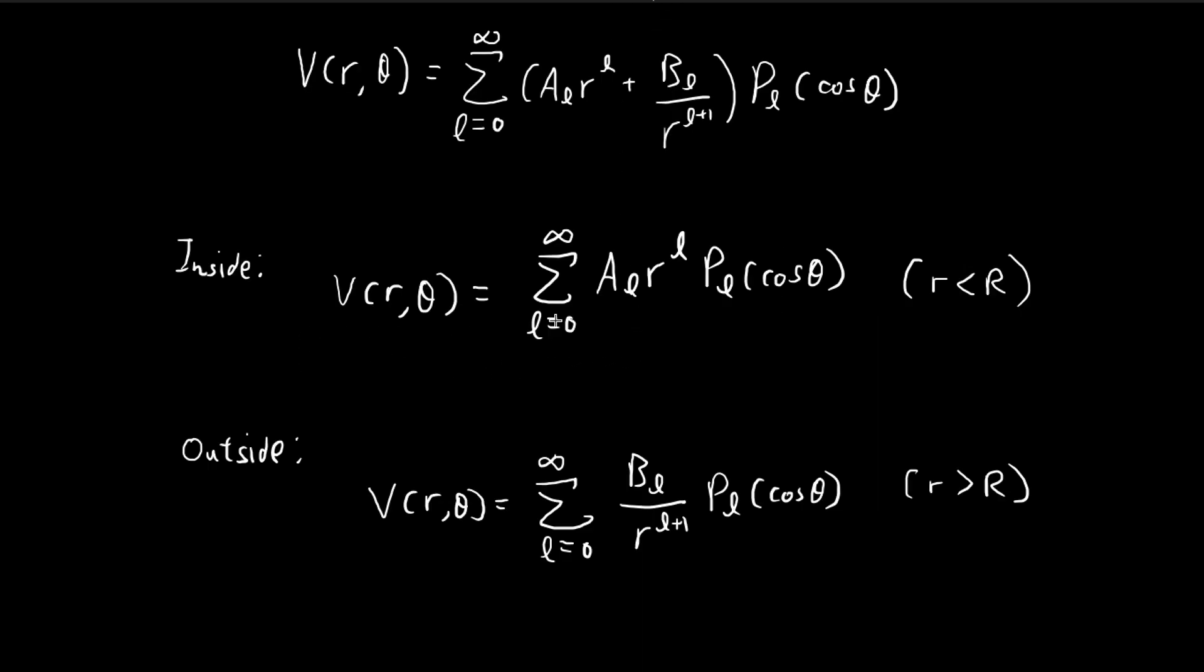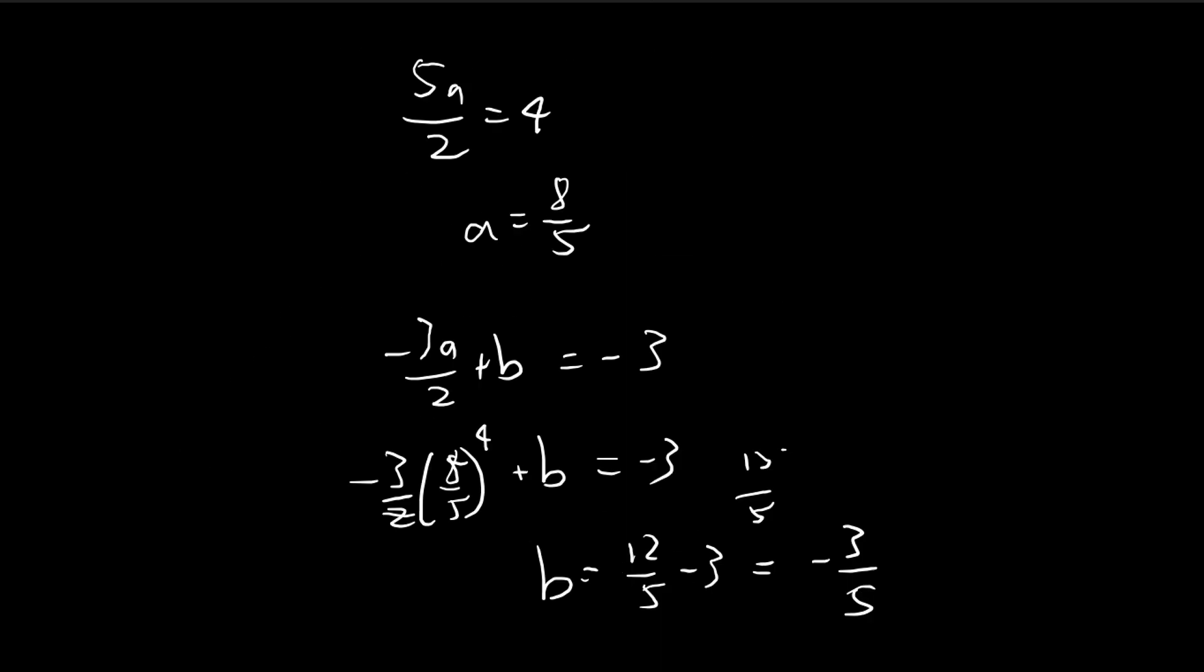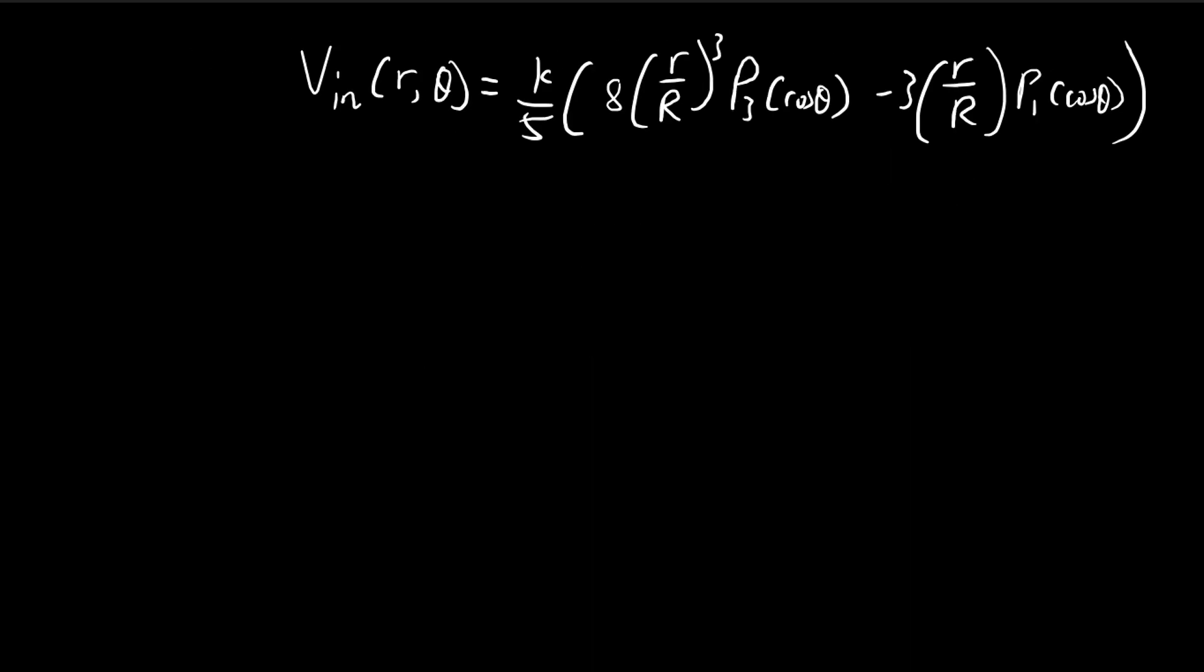We can find B using A because both these functions are continuous, so they must meet at some point to form a larger continuous function. Once both functions meet at the surface of the sphere, both expressions must be equal. So using that piece of information, we can actually deduce what the B terms should be.